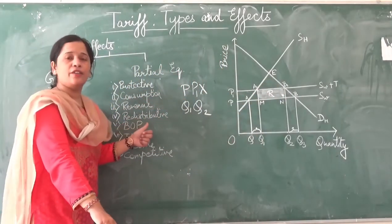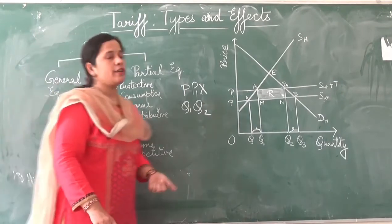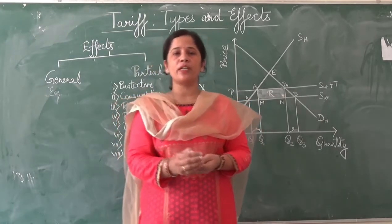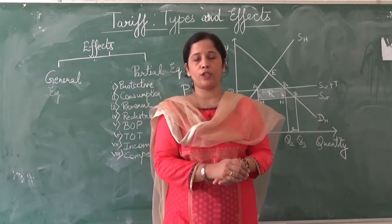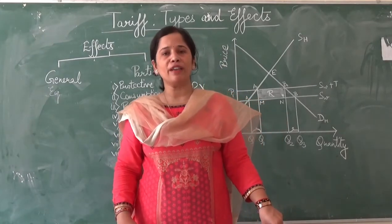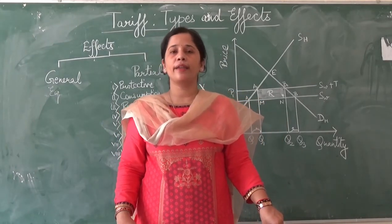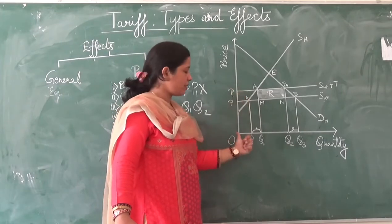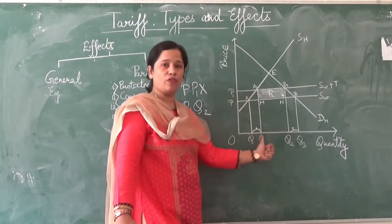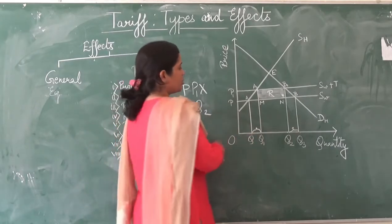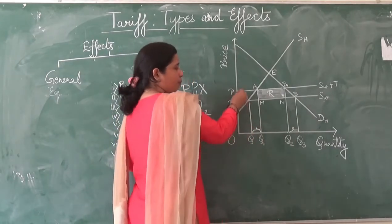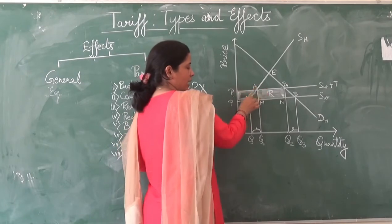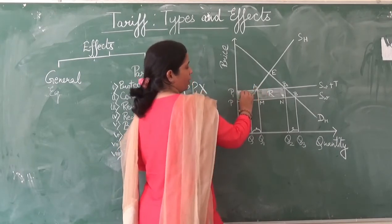The fourth is the redistributive effect. This refers to the redistribution of consumer surplus in the form of producer surplus — that is, an increase in producer surplus and a decrease in consumer surplus. With the imposition of a tariff, the domestic supply increases from OQ to OQ1, and domestic consumers pay the higher price P1. The area OP, P1, N, A represents the redistributive effect of a tariff.